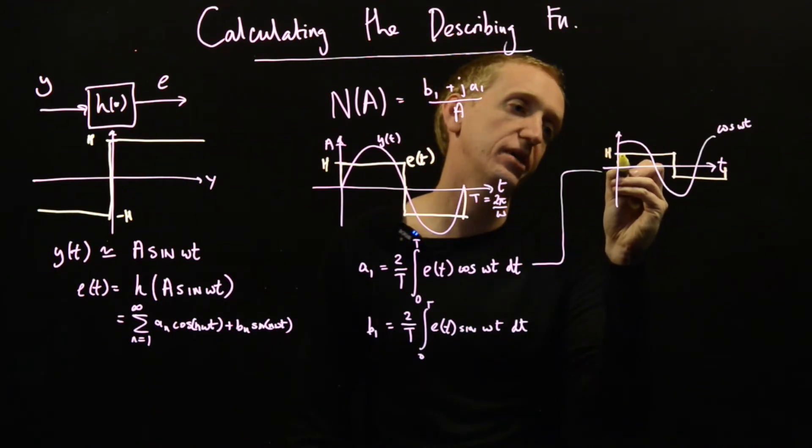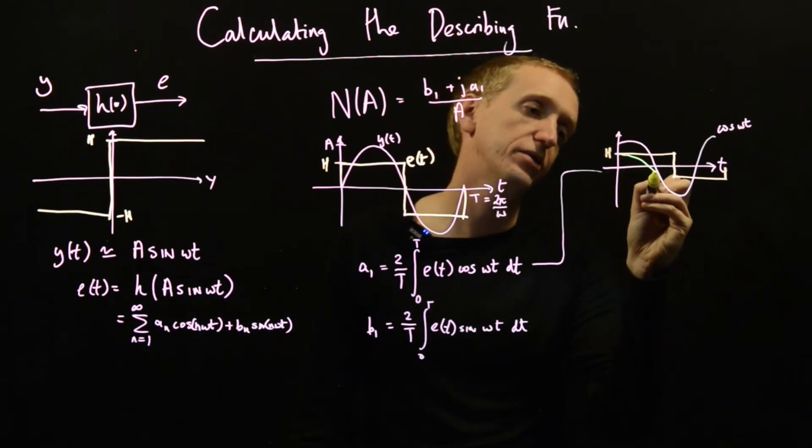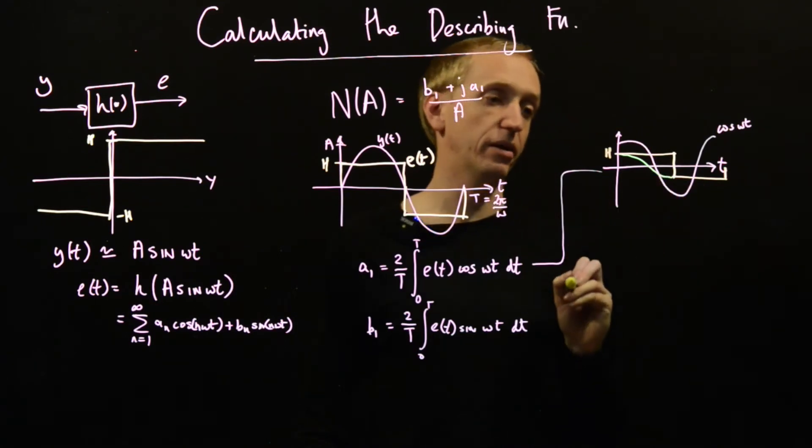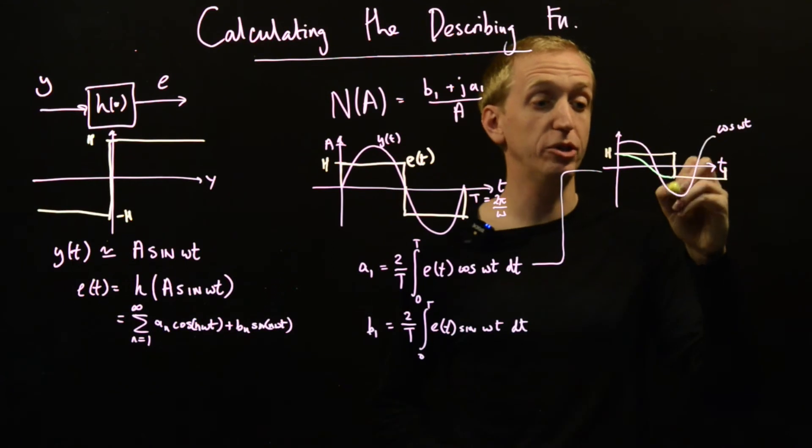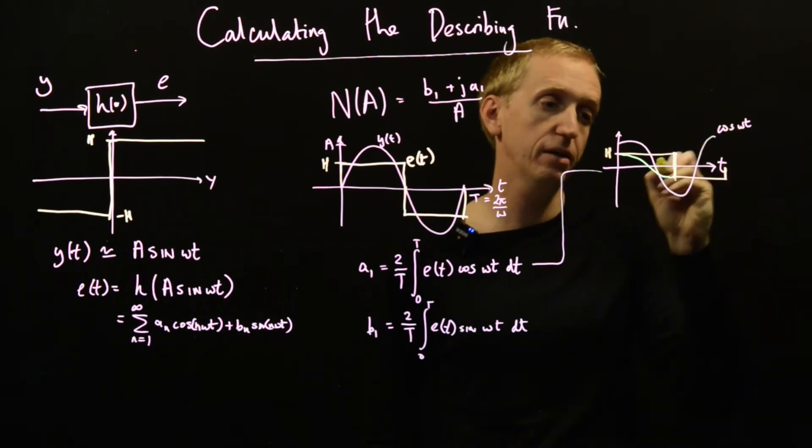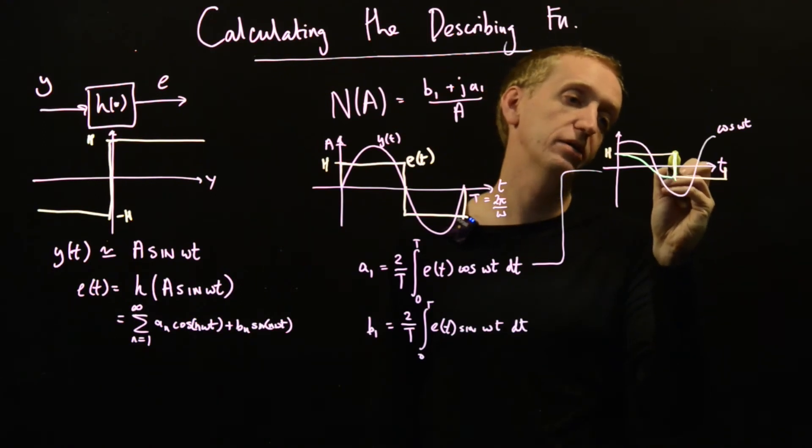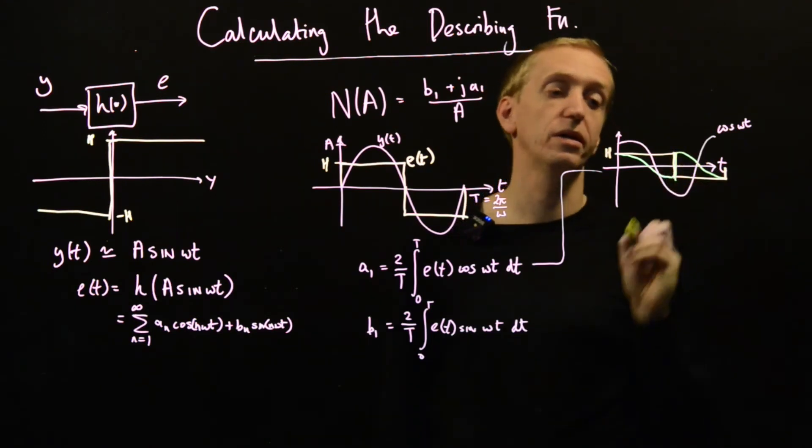And then at half the period, the sign flips. And so we just multiply the cosine wave by minus h. So we flip up here, up here. And then we get minus the cosine wave. And it looks like that. So this very funky fluorescent curve, this is e(t)cos(ωt).